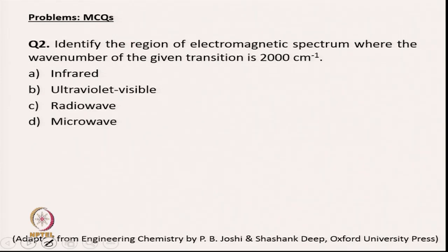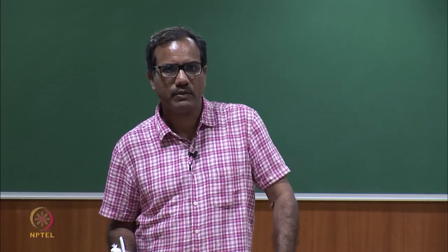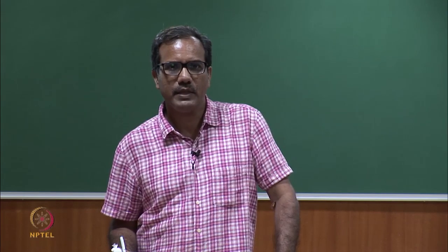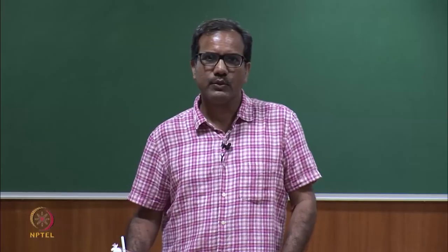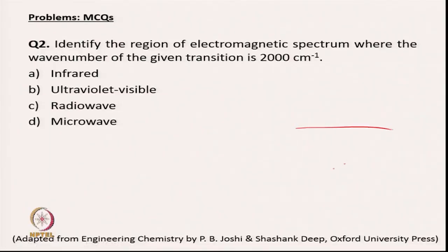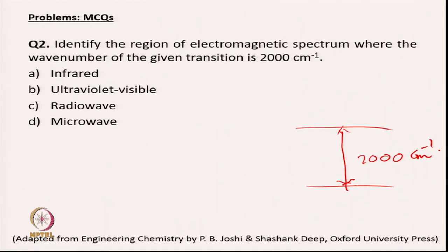The second question asks you to identify the region of the electromagnetic spectrum where the wave number of a given transition is 2000 cm⁻¹. The wavelength corresponding to 2000 cm⁻¹ falls in the IR region, so the answer is the infrared region.